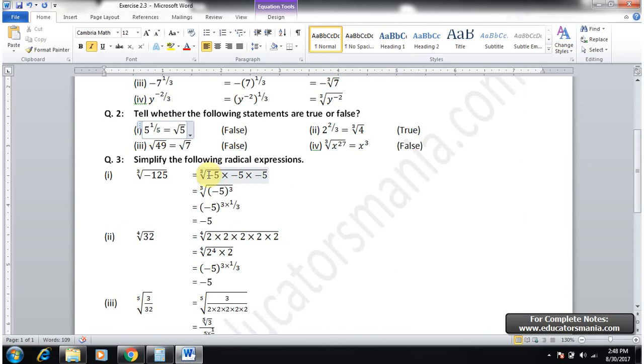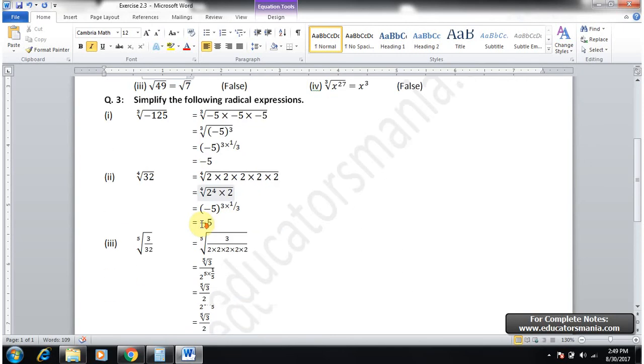So minus 5 into minus 5 equals 25, into minus 5 equals minus 125. So minus 5 to power 3 we can write, and radical sign 1 over 3 will be there because third root. So 3 and 3 cancel and minus 5 will remain, equals minus 5.